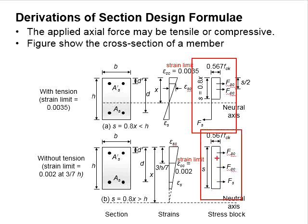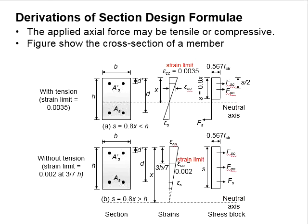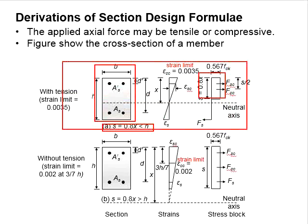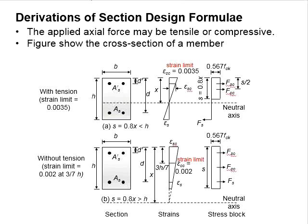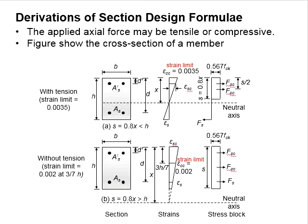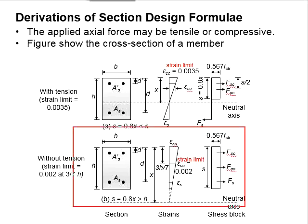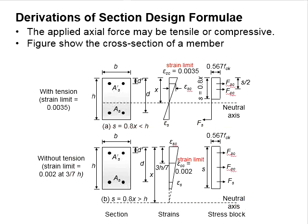As we normally use the simplified stress block to quantify the forces and moments acting in the column, it is more precise to say that when the stress block ends within the cross-sectional area of the member, the first set of conditions applies. When the stress block falls beyond the cross-section, the column is entirely in compression. These expressions give explicit differences between the two scenarios.